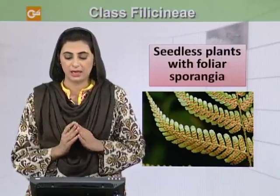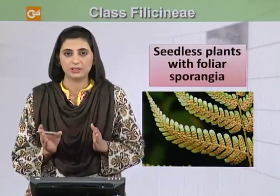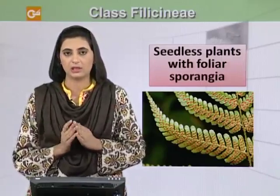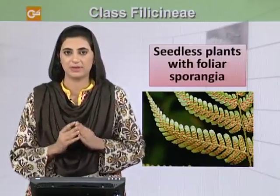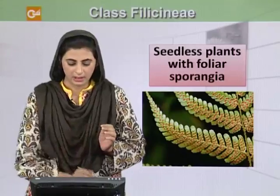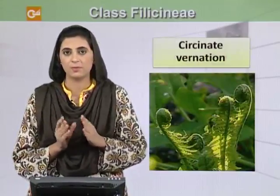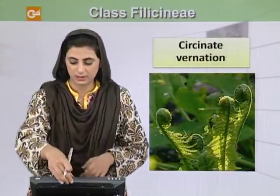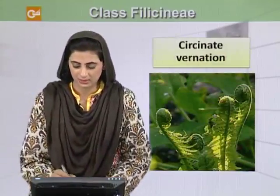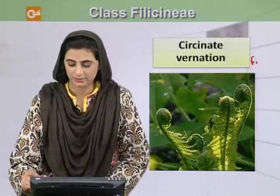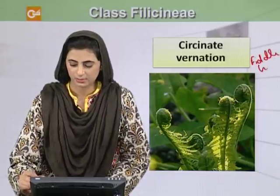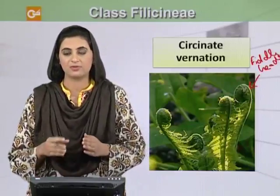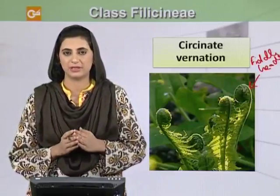Filicinae are actually ferns and they are seedless plants with foliar sporangia. You can see in the leaves' underside they bear sporangia, and when the leaves are in young form, they are coiled at the tips. These tips are called fiddleheads, and this type of development is called circinate vernation.